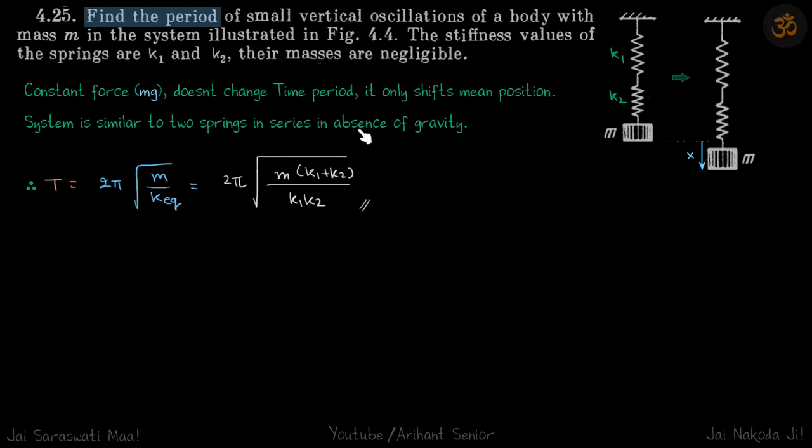springs in series in the absence of gravity. In that case, our time period will be simply 2π√(m/k_eq), where k_eq is the equivalent of both springs. Because the springs are in series, k_eq = k1k2/(k1 + k2). So this is our answer.